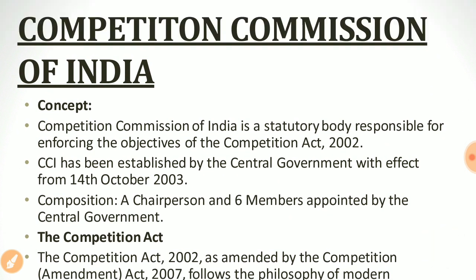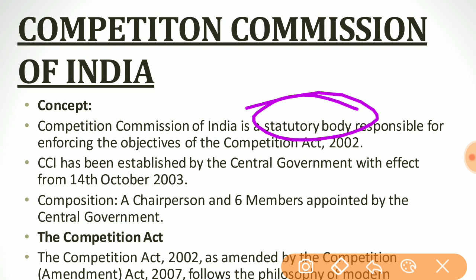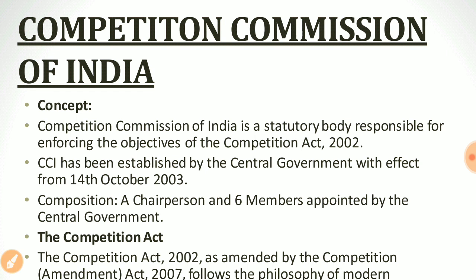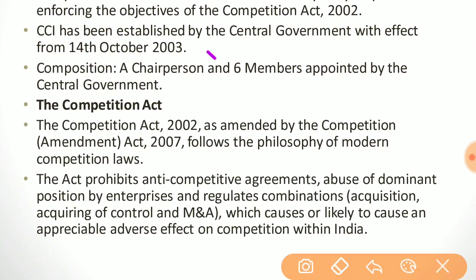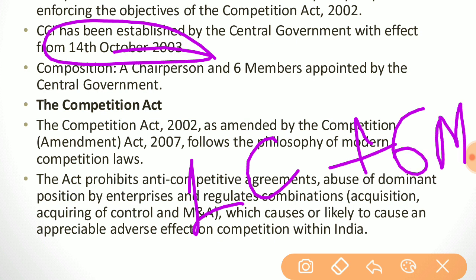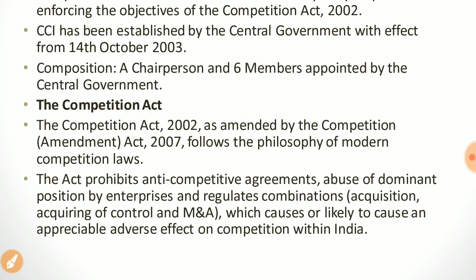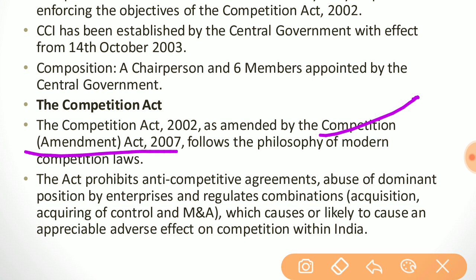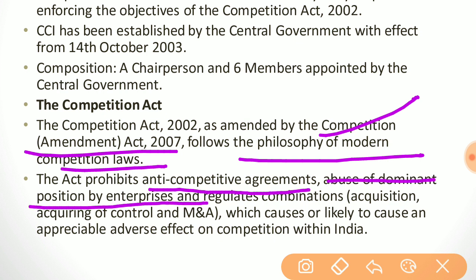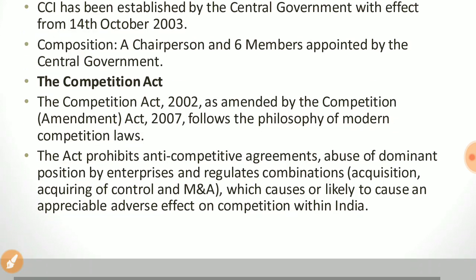The next topic is the Competition Commission of India. The CCI is a statutory body responsible for enforcing the objectives of the Competition Act 2002. It was established by the central government with effect from 14th October 2003, and has one chairperson plus six members appointed by the central government. An amendment was made through the Competition Amendment Act 2007. The act prohibits anti-competitive agreements, abuse of dominant position by enterprises, and regulates combinations which cause or are likely to cause an appreciable adverse effect on competition within India.